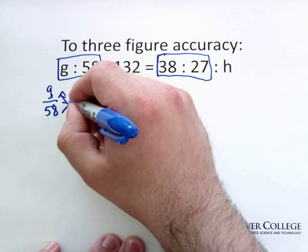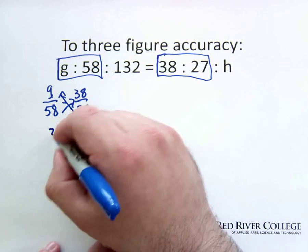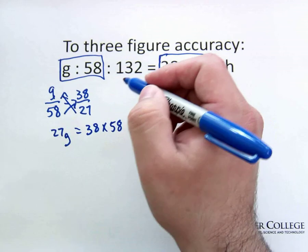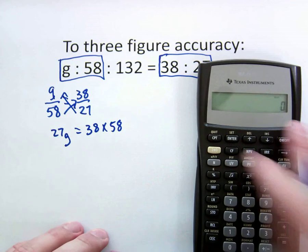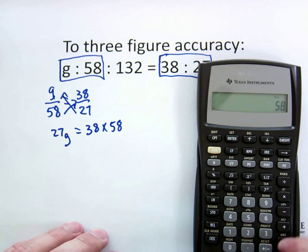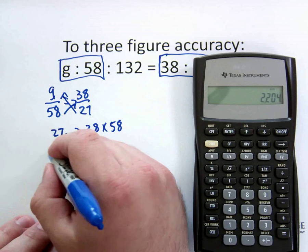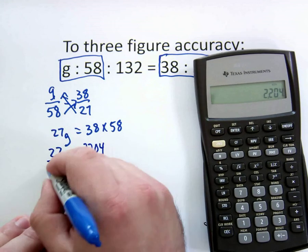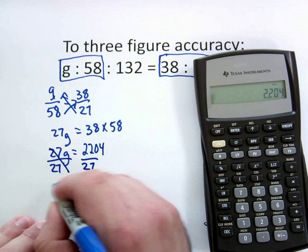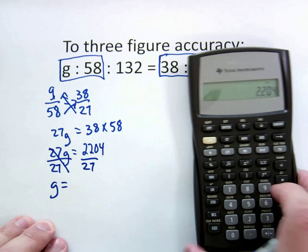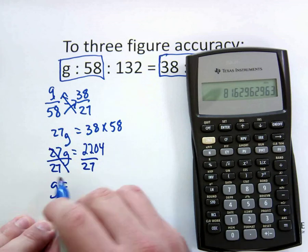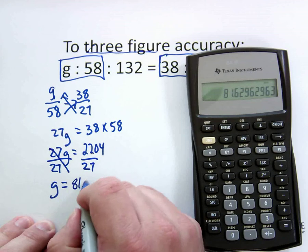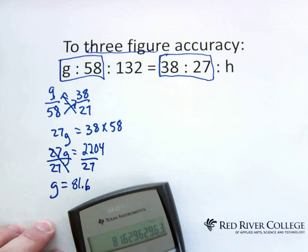We'll now do our cross multiplication. So then we'll have 27g is equal to 38 times 58. Bring in our calculator. So 38 times 58 is equal to 2,204. So 27g is equal to 2,204. We'll now divide by 27. g is three figures. So g is 81.6. So that's how we solve for g.